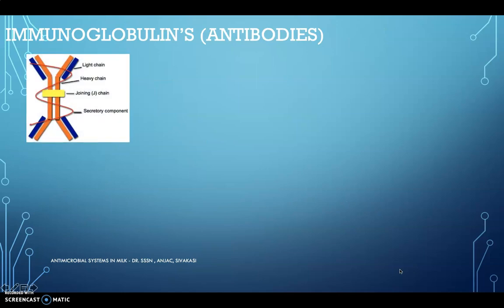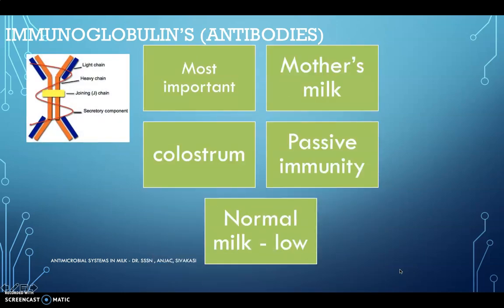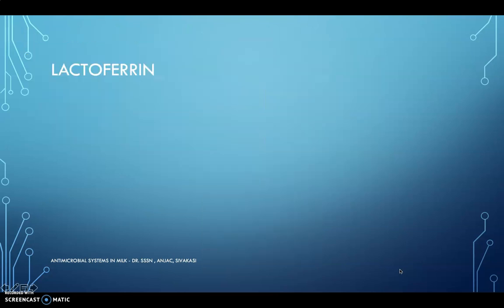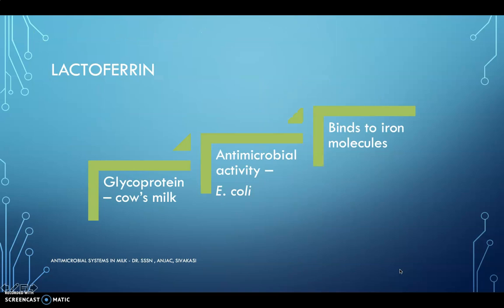The first and most important antimicrobial protein is immunoglobulins. It is present in the mother's milk, also called colostrum. It provides immunity to neonates. Antibodies are normally present in milk, and mother's milk consists of a higher amount of antibodies compared to normal milk.